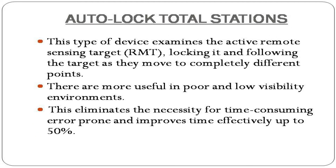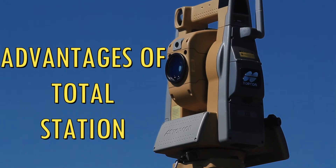Autolock Total Stations examine the active remote sensing target, lock onto it, and follow the target as it moves to different points. They are more useful in poor and low visibility environments. This eliminates time-consuming and error-prone manual aiming, improving time efficiency by up to 50%.